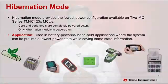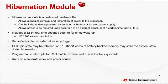The fourth mode of operation is hibernation mode. It provides the lowest power configuration available on TM4C123X microcontrollers. This mode allows users to completely power down the core and peripherals while only maintaining power to the hibernation module. This is particularly useful in battery-powered handheld applications where the system can be put into the lowest power state while saving some state information. The hibernation module manages removal and restoration of power to reduce overall power consumption. It is independently powered by an external battery or auxiliary power supply and has its own independent clock domain.